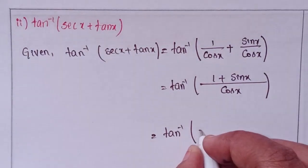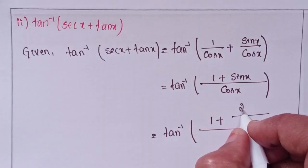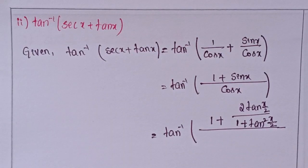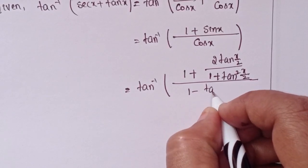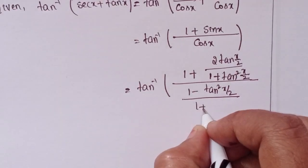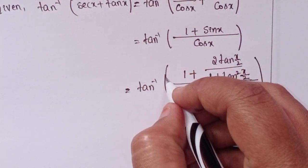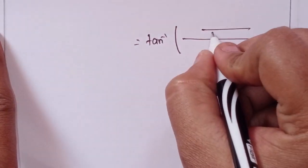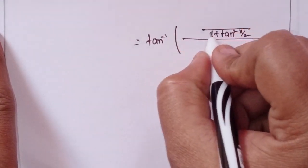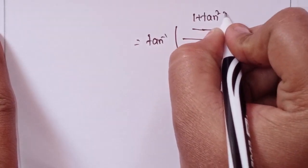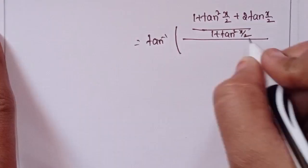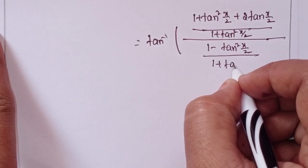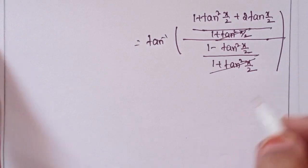Tan inverse of 1 plus sin x, where sin in terms of tan means 2 tan(x/2) divided by 1 plus tan²(x/2). And cos also in terms of tan means 1 minus tan²(x/2) divided by 1 plus tan²(x/2). Taking LCM as 1 plus tan²(x/2), cross multiplication gives 1 plus tan²(x/2) plus 2 tan(x/2), then 1 minus tan²(x/2) over 1 plus tan²(x/2). This one and this one cancel.